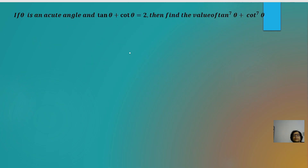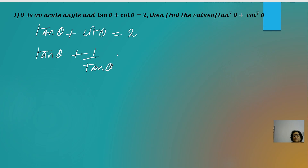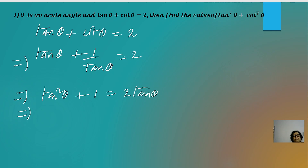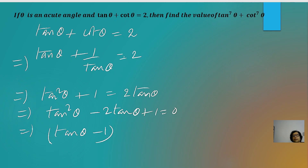Next question: if tan θ + cot θ = 2 and θ is an acute angle, find tan⁷θ + cot⁷θ. Writing cot θ as 1/tan θ and taking LCM gives tan²θ + 1 = 2tan θ, which rearranges to tan²θ − 2tan θ + 1 = 0, i.e., (tan θ − 1)² = 0. So tan θ = 1 = tan 45°, meaning θ = 45°.